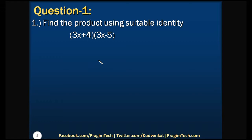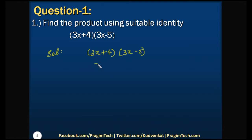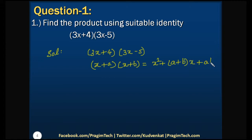Let us solve question number one: find the product using a suitable identity. If we want to calculate the product of these two terms, instead of multiplying the first term with all the terms in the second term, we use the identity (x + a)(x + b) = x² + (a + b)x + ab.